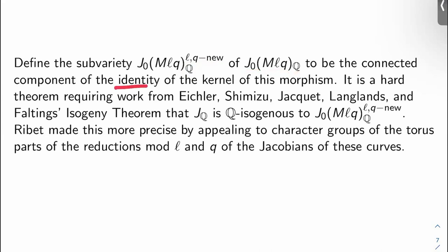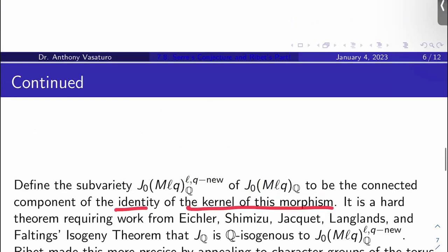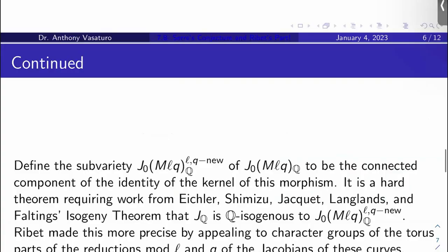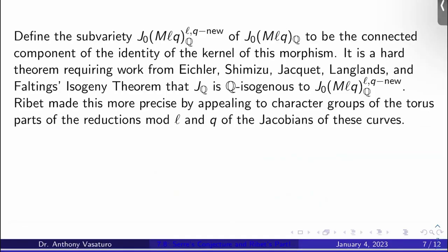Let's define the subvariety J_0(Mℓq)^{ℓq-new} over Q of J_0(Mℓq) over Q to be the connected component of the identity of the kernel of this map. So take the kernel of this map, take the connected component of the identity, that's your ℓq-new space. It's a hard theorem requiring work from a lot of people, in particular the Jacquet-Langlands correspondence and Faltings' isogeny theorem that J_q, the Jacobian, is actually Q-isogenous to this ℓq-new space. Okay, so Ribet, what he does is he makes this more precise by appealing to character groups of the torus parts of the reduction model mod q of the Jacobians of these curves. So that's what we're going to look at today.